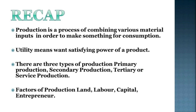A short recap: Production is the process of combining various material inputs in order to make something for consumption. Utility means the want-satisfying power of a product. There are three types of production: primary, secondary, and tertiary or service production. The factors of production are land, labour, capital, and entrepreneur. Students, I hope you understood everything. Be safe and take care. Bye.